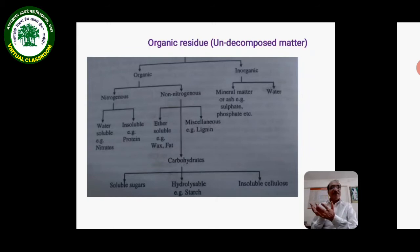Non-nitrogenous is divided into three parts. First is ether-soluble, which includes wax and fat.